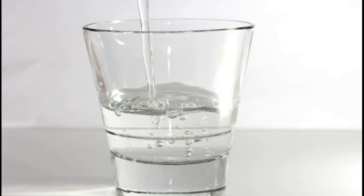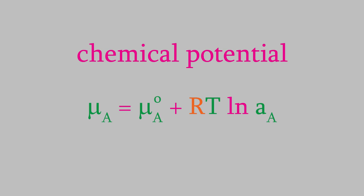As it turns out, the activity is also closely related to another property that we've talked about before — the chemical potential. For a solution containing a chemical A, the chemical potential of A is equal to the chemical potential of a solution of pure A plus R times T times the logarithm of the activity of A. We'll see this equation again in future videos when we start to discuss reactions at equilibrium. It turns out there's a deep connection between the activity of a compound and the equilibrium constant.